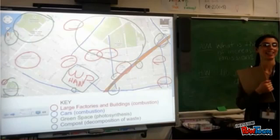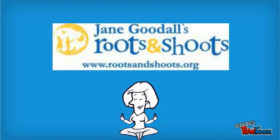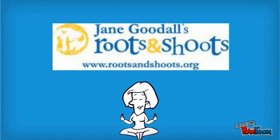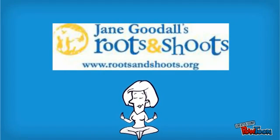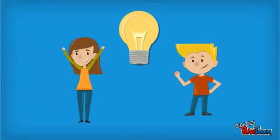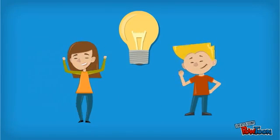First, we had students map the community in order to identify the main cause of carbon emissions. This mapping technique for identifying issues was developed by Roots and Shoots. After each student identified an issue, they were directed to form two teams to research and decide on one key issue to focus on for their project.